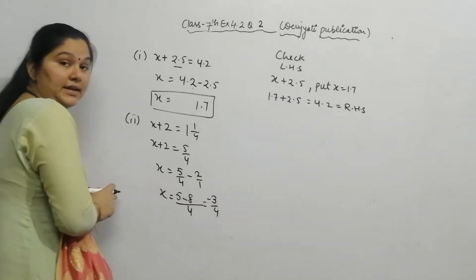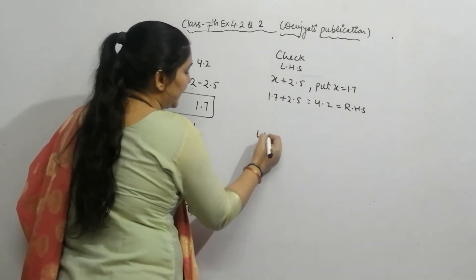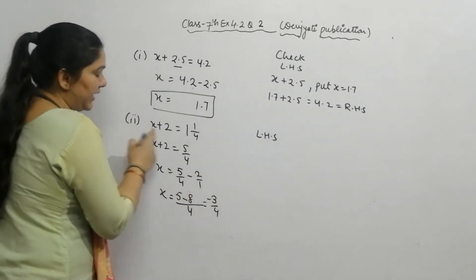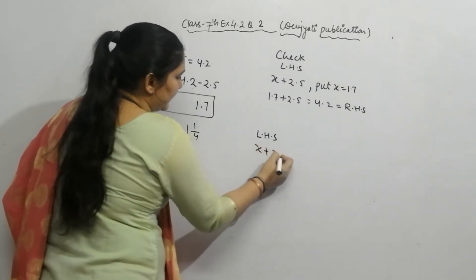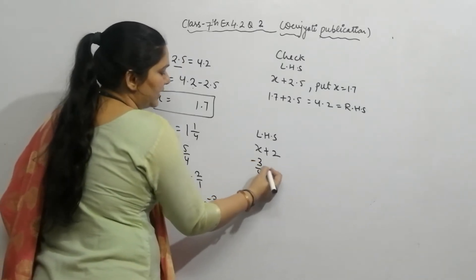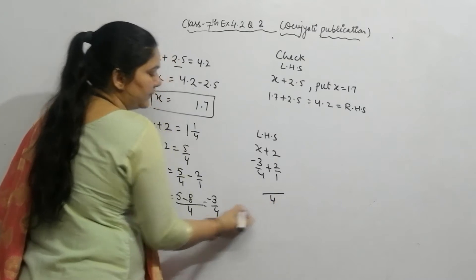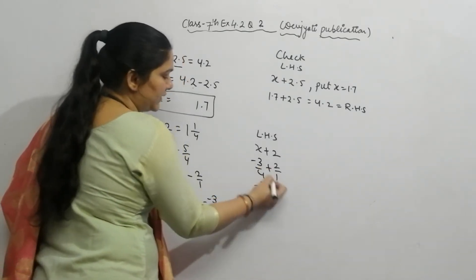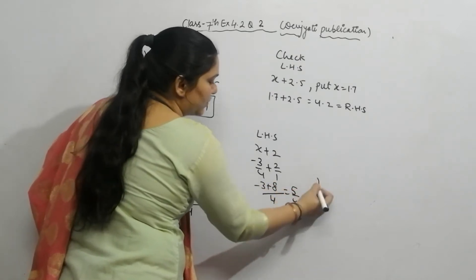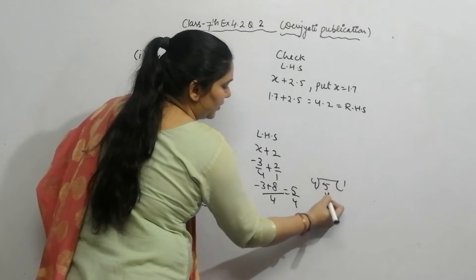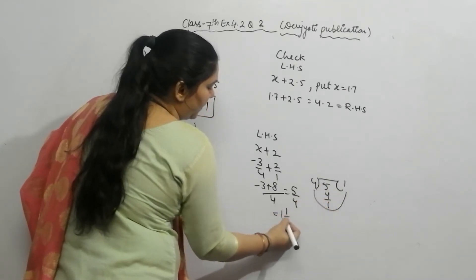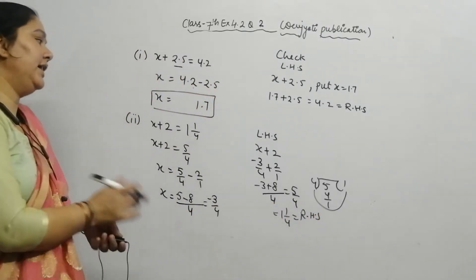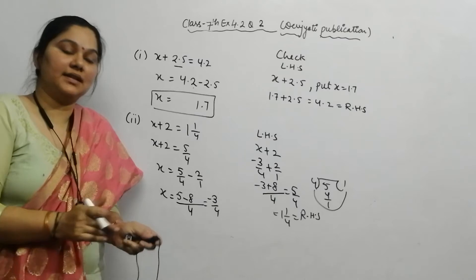Now check this value. Take the left-hand side: x plus 2. Put x equal to minus 3 by 4, so minus 3 by 4 plus 2 by 1. LCM is 4: minus 3 plus 4 times 2 gives minus 3 plus 8 equals 5 by 4. Convert to mixed fraction: 5 by 4 is 1 and 1 by 4, which equals the right-hand side. So our answer is correct.